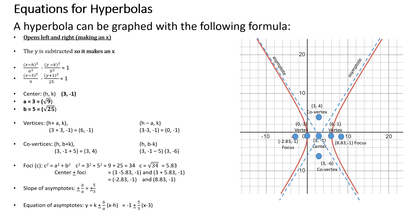Now find the foci — there are two, along the major (transverse) axis at y equals negative 1. C squared equals A squared plus B squared equals 9 plus 25 equals 34, so C equals the square root of 34, approximately 5.83. From center (3, negative 1): one focus is at (3 minus 5.83, negative 1) which is approximately (negative 2.83, negative 1), and the other is at (3 plus 5.83, negative 1) which is approximately (8.83, negative 1).